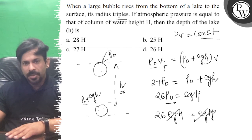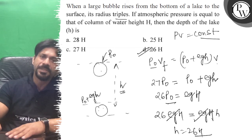So ρg times small h is equal to 26 capital H, right? Answer is D. All the best.